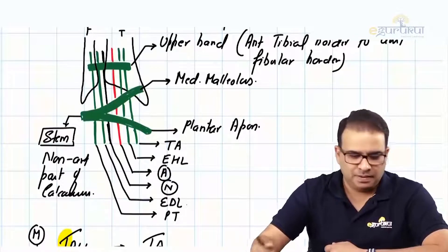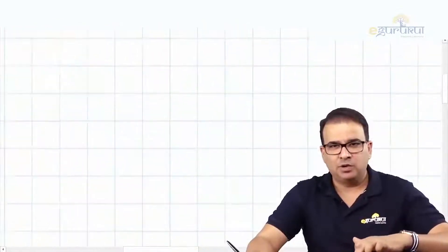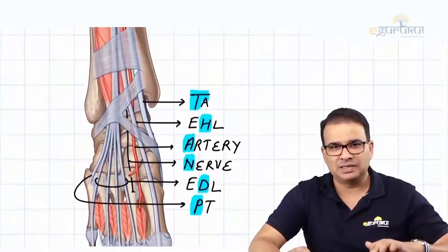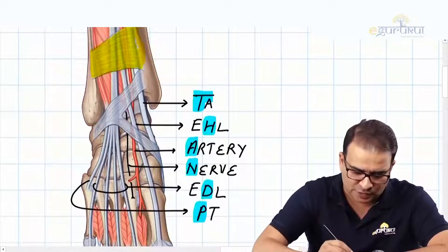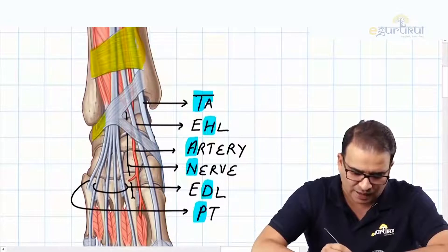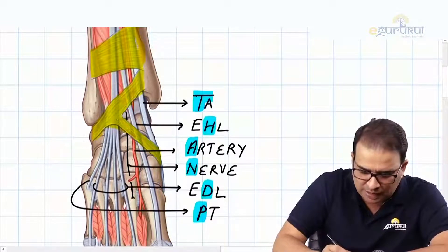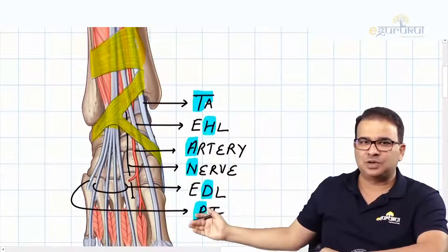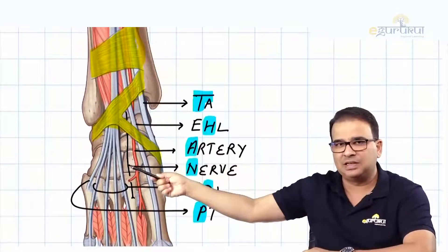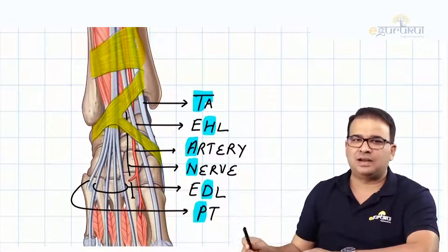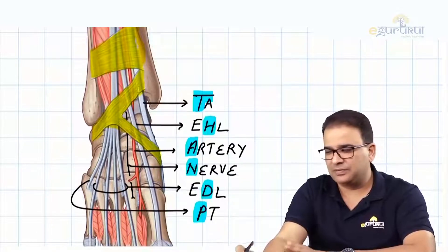Comparing with the atlas image: you can see the upper band attached from the anterior surface of the fibula to the anterior surface of the tibia. The lower band is attached to the non-articular part of the calcaneum, going up to the medial malleolus and downward toward the plantar aponeurosis. The structures are labeled: tibialis anterior, extensor hallucis longus, the artery, the deep peroneal nerve, extensor digitorum longus, and most laterally, peroneus tertius inserting to the base of the fifth metatarsal.